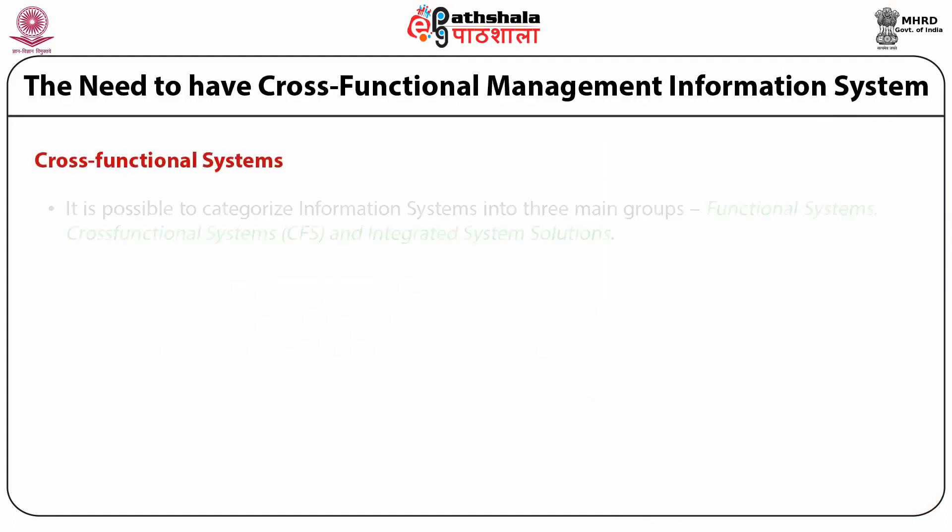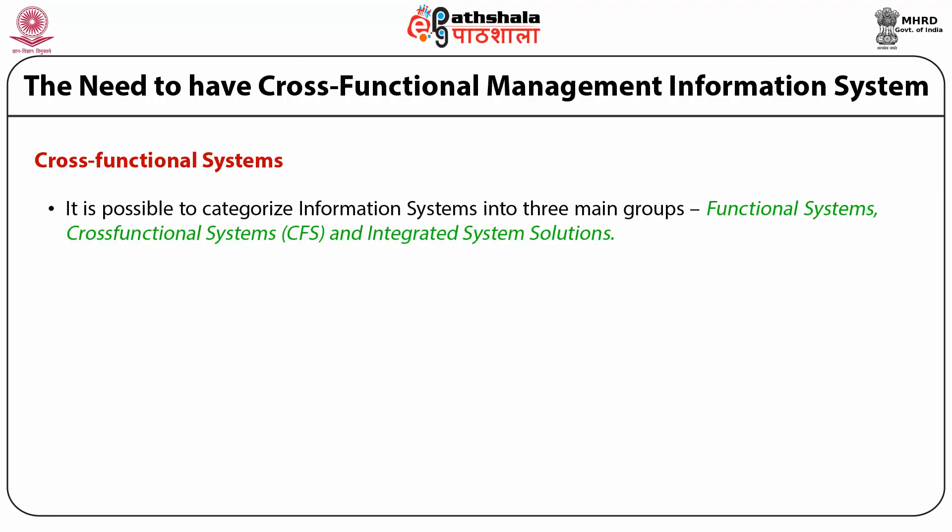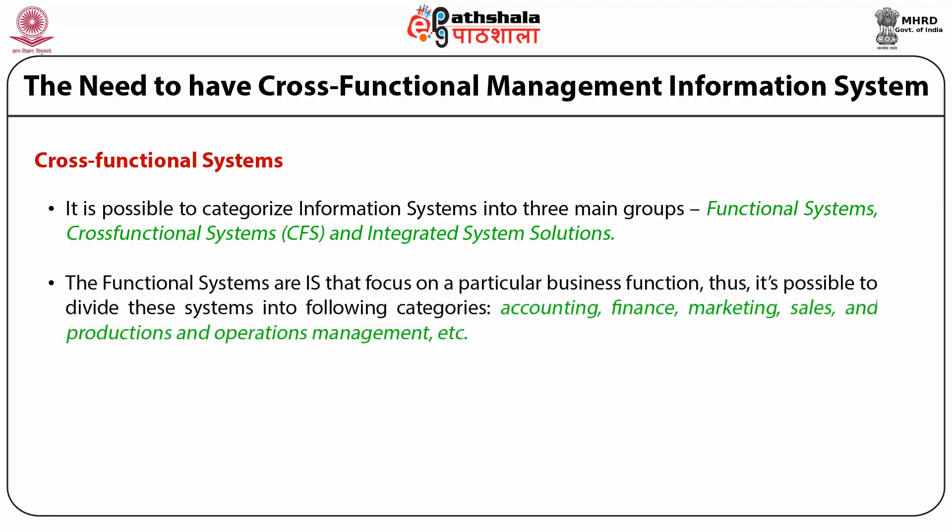Regarding cross-functional systems, it is possible to categorize information systems into three main groups: functional systems, cross-functional systems, and integrated system solutions. The functional systems are information systems that focus on a particular business function. Thus, it is possible to divide these systems into the following categories: accounting, finance, marketing, sales, and production and operations management, etc.